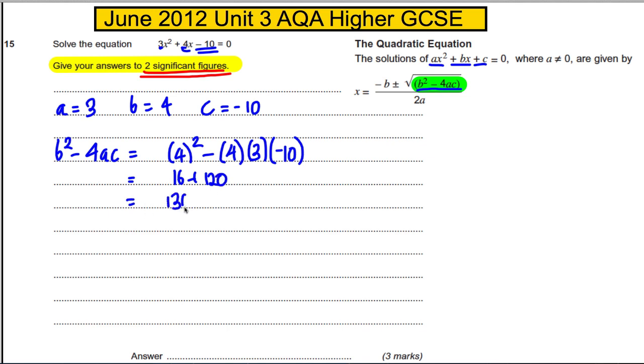And now we can just substitute into this formula. x on the one hand is -b which is -4 plus the square root of 136, all of that over 2a, over 6. Or x on the other hand is -4 subtract the square root of 136 all over 6. Students think that it's only the square root bit over 2a—it's the negative b as well.